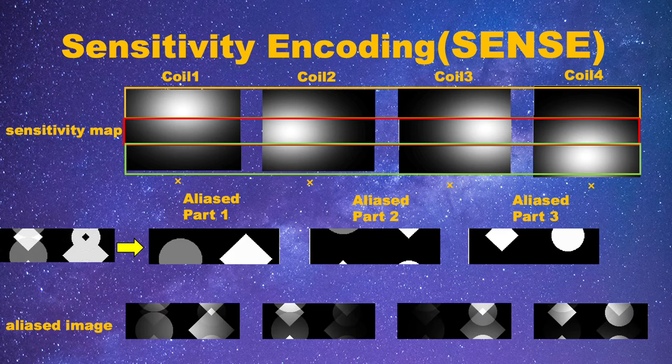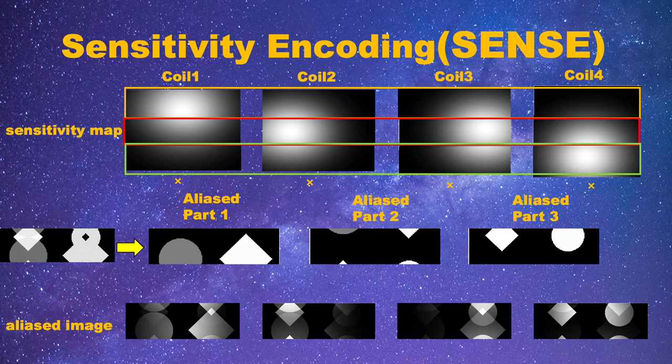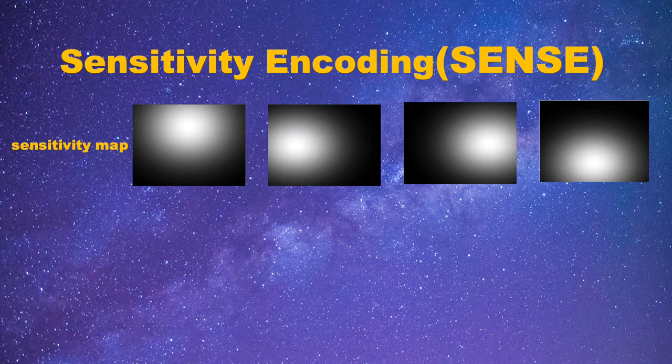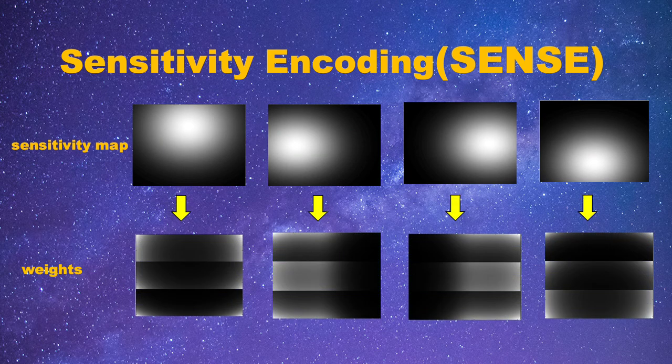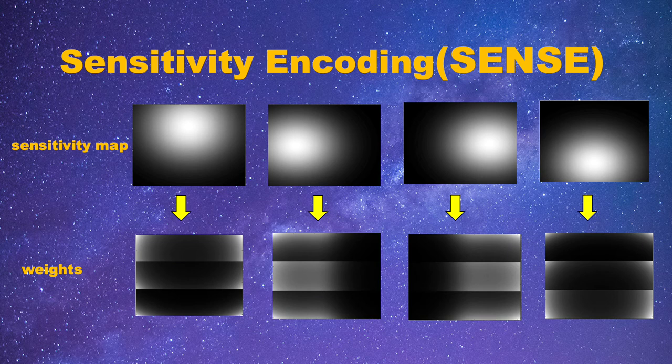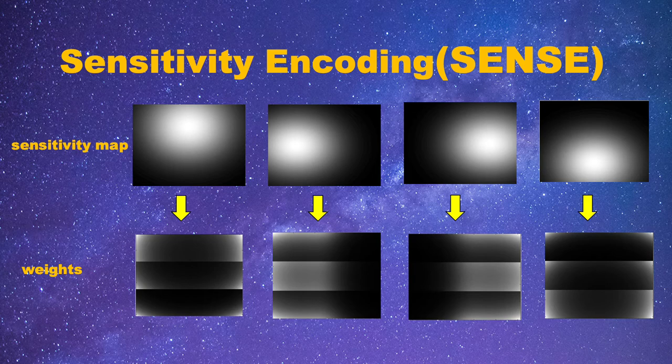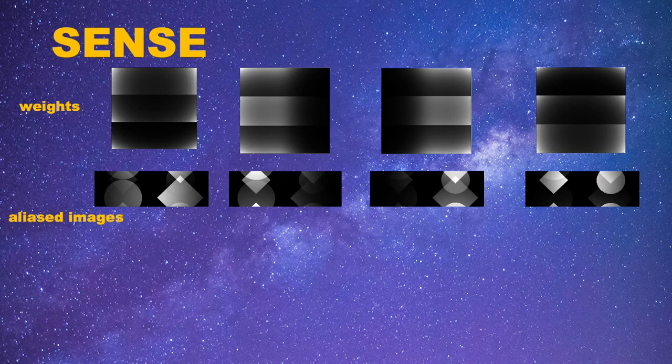This will make the aliased images for each of the coils. Now, we have already known the components of these images. The next step is just to reverse the step and get back the aliased images. By doing a process of matrix inversion on sensitivity maps, we can get new maps called the weights. These weights describe the contribution of each coil on the final image.